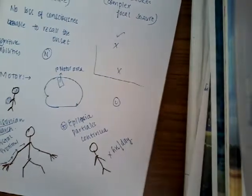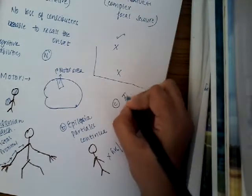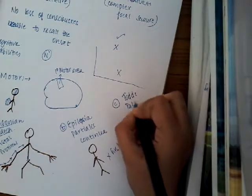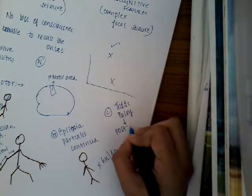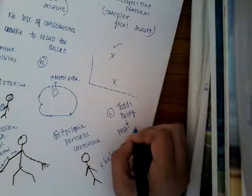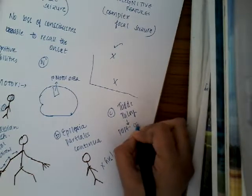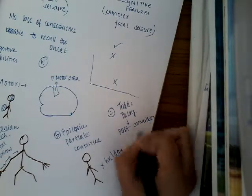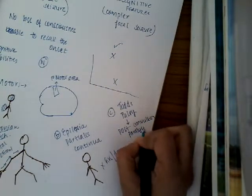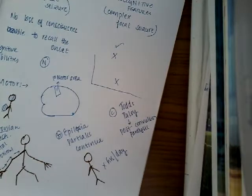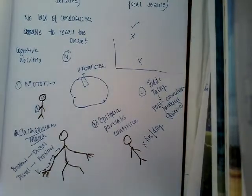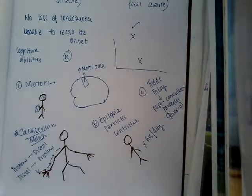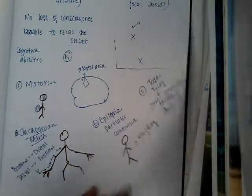There is one more feature for the motor seizure, which is called Todd's palsy, also called Post-Seizure Paralysis. Just after the seizure, the patient will have paralysis — Post-Convulsion Paralysis. If the leg is involved, then the power of that leg will be zero. That is the third type, which is called Todd's palsy.